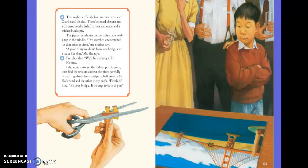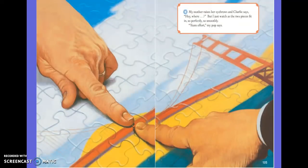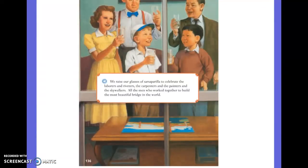It's time. I slip upstairs to the hidden puzzle piece, then find scissors and cut the piece carefully in half. I go back down and put a half piece in Mr. Shue's hand and the other in my Pop's. Finish it, I say. It's your bridge — it belongs to both of you. My mother raises her eyebrow and Charlie says hey, where? But I just watch as the two pieces fit in so perfectly, so smoothly. Team effort, Pop says. We raise our glasses of sarsaparilla to celebrate the laborers and riveters, the carpenters and the painters and the skywalkers — all the men who worked together to build the most beautiful bridge in the world.